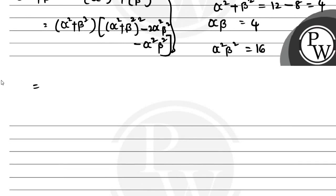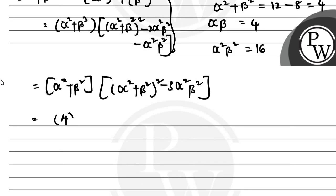Now substituting the values: α² + β² = 4, and α²β² = 16. So we get 4 × [4² - 3 × 16] = 4 × [16 - 48].